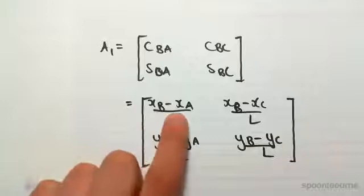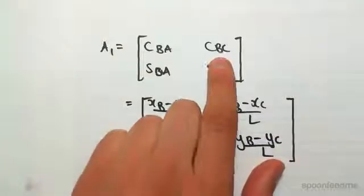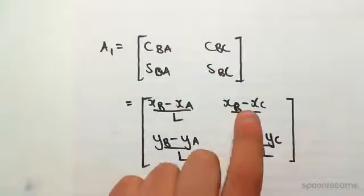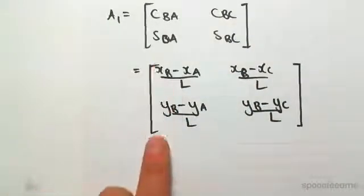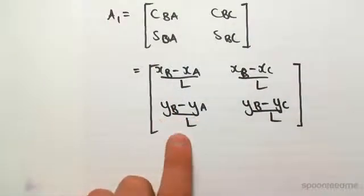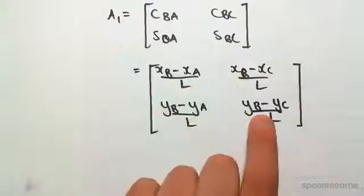So we have cos BA would be xB minus xA over L, cos BC would be xB minus xC over L, sine BA would be yB minus yA over L, sine BC would be yB minus yC over L.